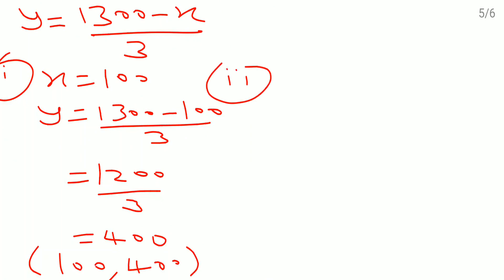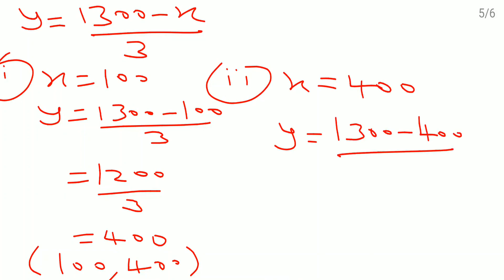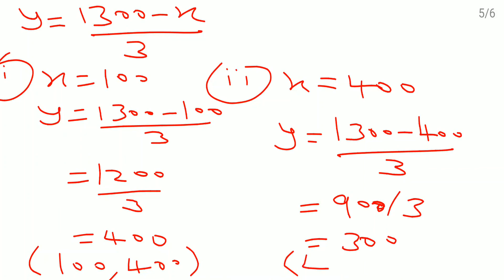For the second solution, suppose x = 400, so y = (1300 − 400) / 3 = 900 / 3 = 300. So the second solution is (400, 300).